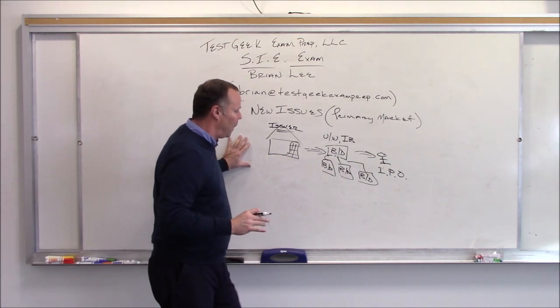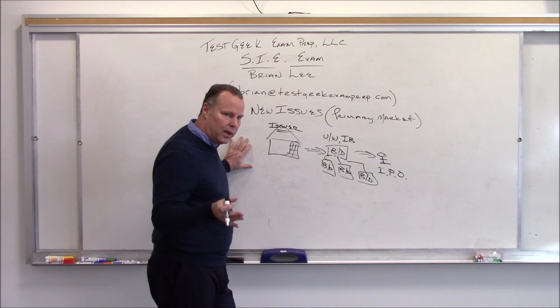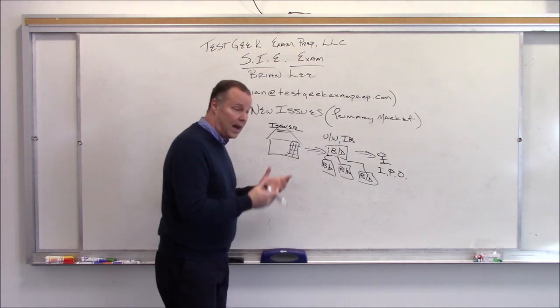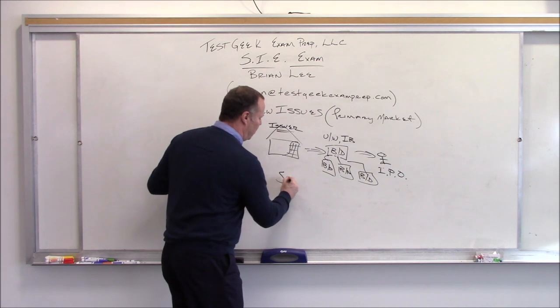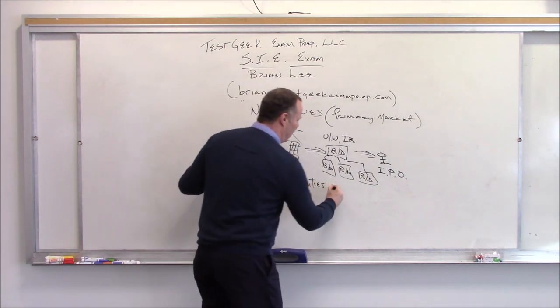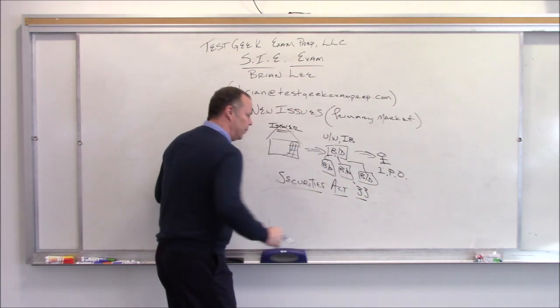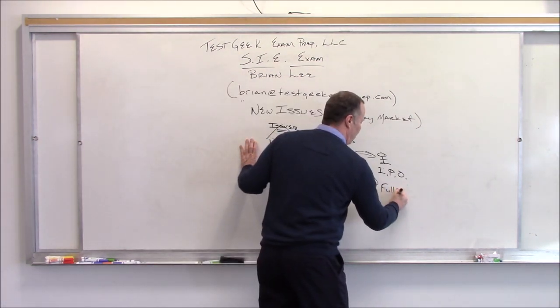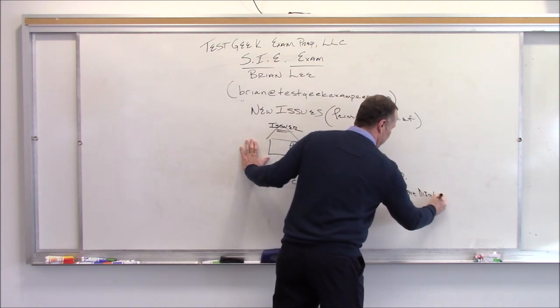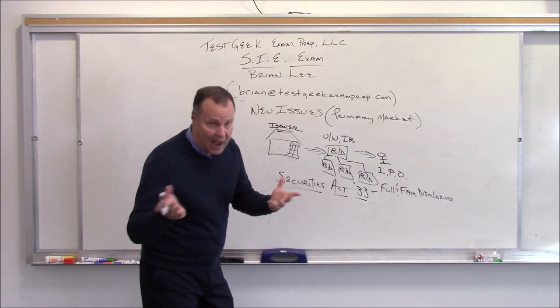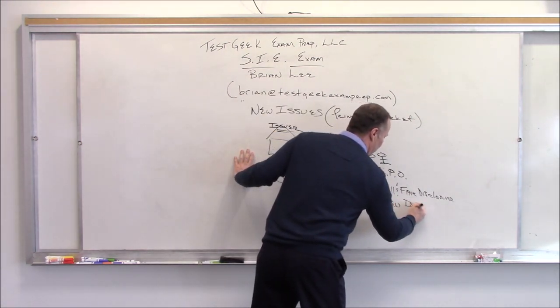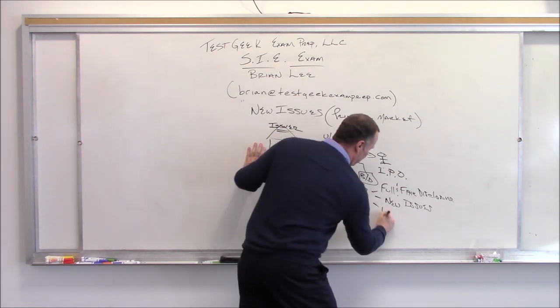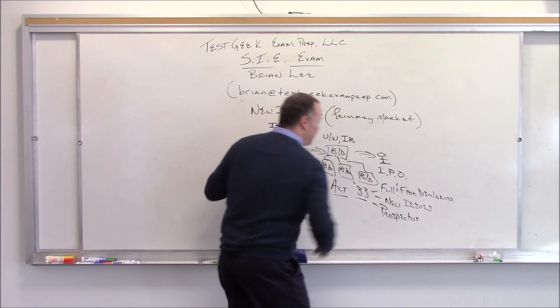Now, that's all well and good. But prior to 1933, we were having these folks sell securities to the public without really disclosing much. So that's when, after the crash of 29, we came up with one of the main pillars of our industry, the Securities Act of 1933. Sometimes people simply refer to this as the Full and Fair Disclosure Act. Some people refer to it as the New Issues Act. Some people simply refer to it as the Prospectus Act.